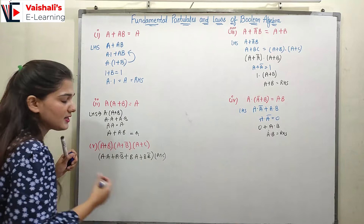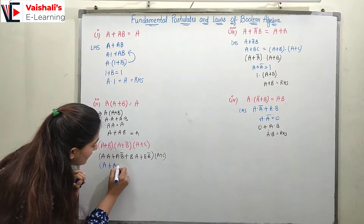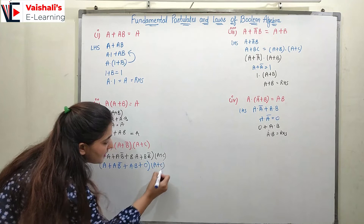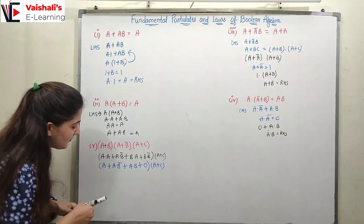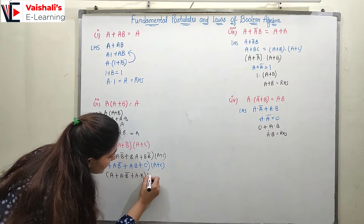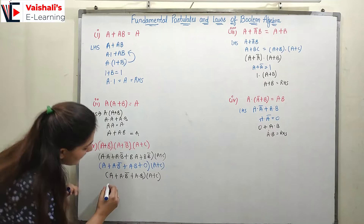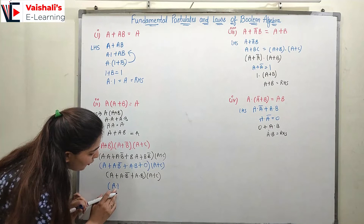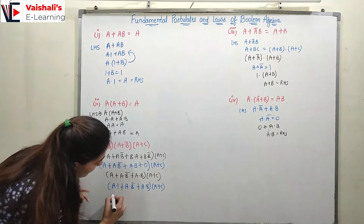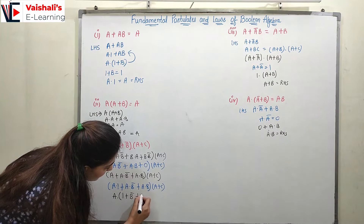So a·a = a, giving us a + a·b̄ + a·b, multiplied with (a + c). Now we can write a as a·1 (identity), so we have a·1 + a·b̄ + a·b. Taking a as common: a·(1 + b̄ + b). Now 1 plus any variable is 1, so 1 + b̄ + b = 1. This gives us a·1·(a + c).